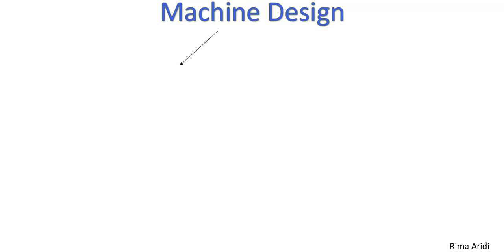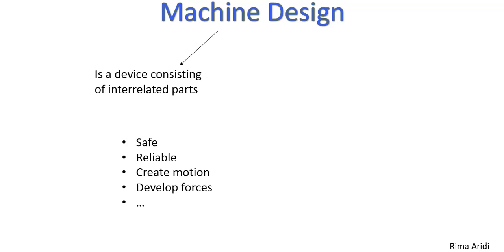Elements such as bolts, bearings, shafts, gears, springs. A machine should be safe, reliable, create motion, develop forces, avoid failure on the short term as much as we can.